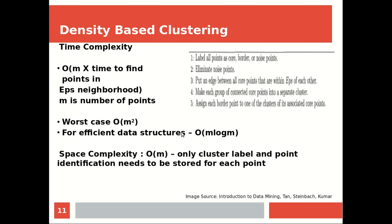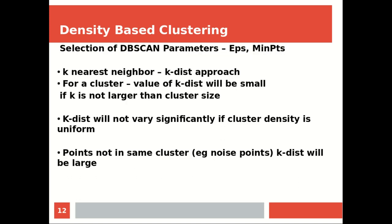Space complexity is O(M) because every point has a cluster label, so M points require M cluster label identifications — the space complexity is not too high. Now, how do we choose the DBSCAN parameters EPS and min points?